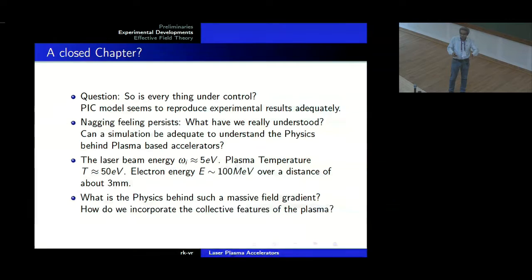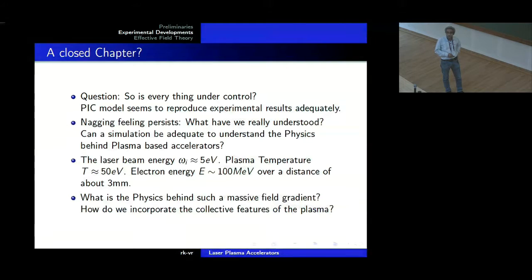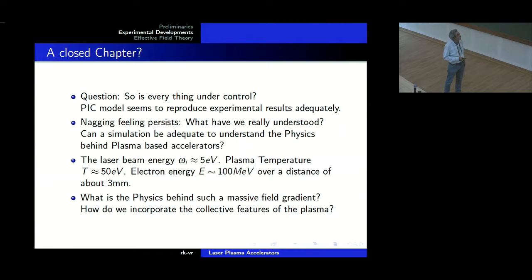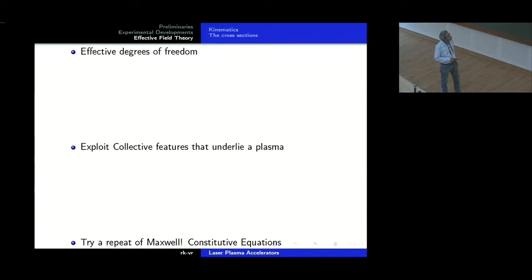At the end of the day what they do is project out the transverse part and get the radiation. Whereas conventionally in an electrodynamics course I would put in Lienard-Wiechert potentials and ask what the radiation is by going to the radiation zone. It is not that PIC misses physics — but PIC probably may not tell you what physics to look for, unless you know to look for radiation. So we want to develop a complementary approach. What we would like to do is incorporate the collective features of the plasma from the very beginning.